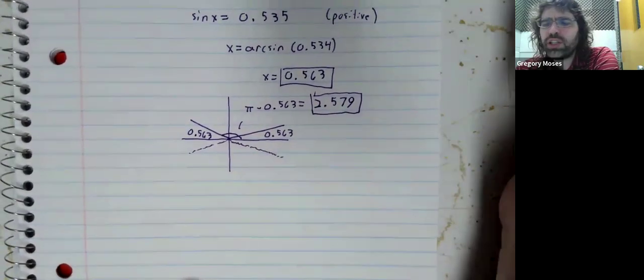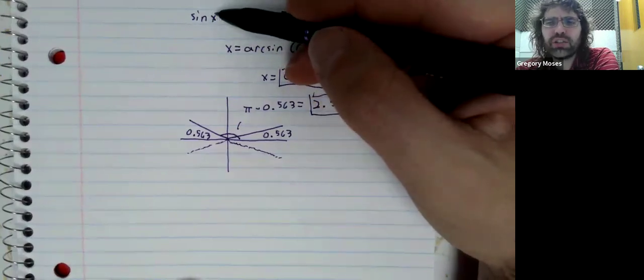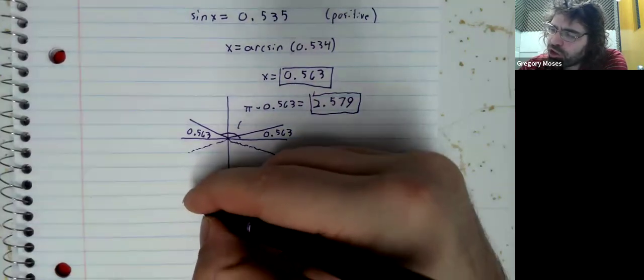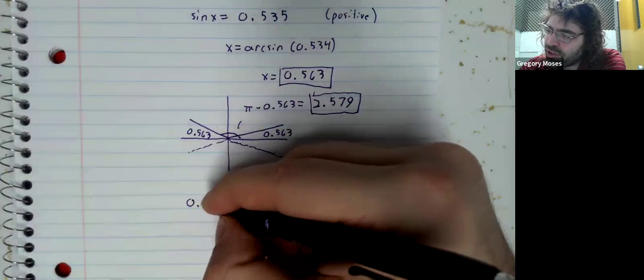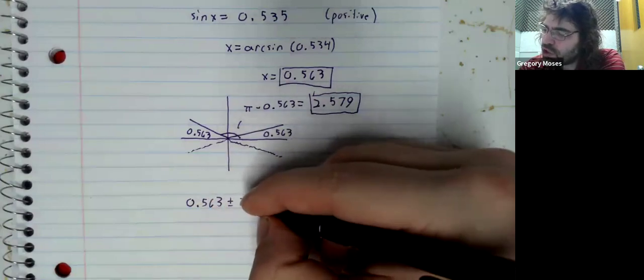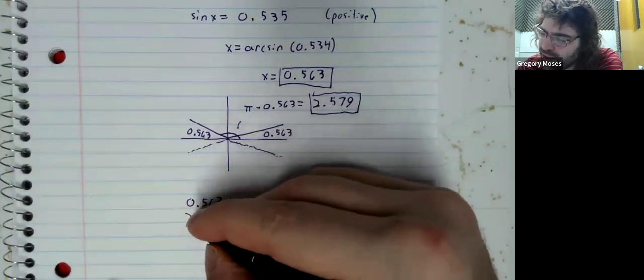but really, because this sine is periodic with period 2 pi, we have a bunch of solutions, where, when I say a bunch, I mean we have infinitely many.